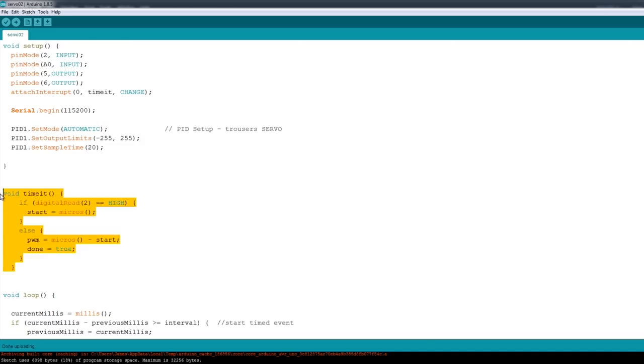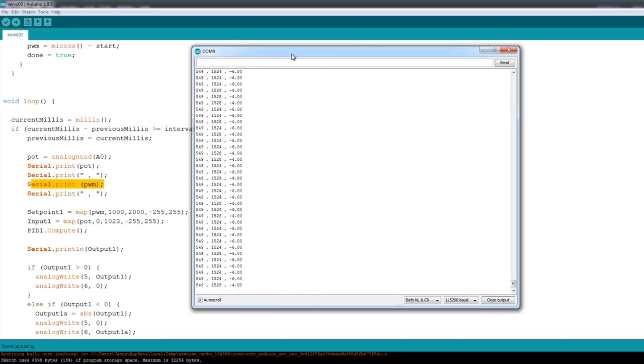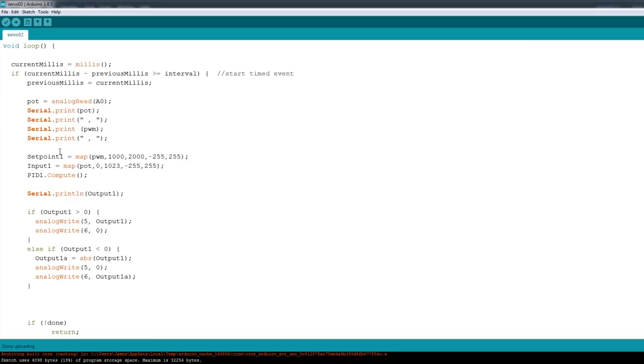So we've still got our time it function, and that's all very well and good, but here I'm reading the pot as an analog in, and I'm writing this out to the serial terminal as well, as well as the PWM from the transmitter. So if we have a look at the serial terminal, you can see as I move the stick here, that number in the middle is changing, which is the PWM. The one on the left-hand column is the pot, and that's about in the middle, so it's about 549. It ranges from zero to 1023. So what we've got in the PID loop is a setup, a set point, an input, and then we do a compute, and that gives us an output.